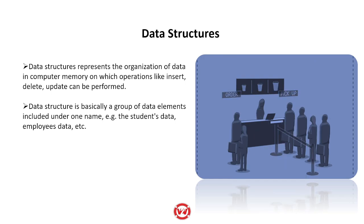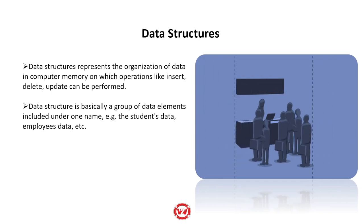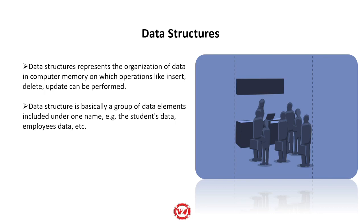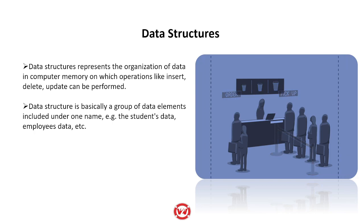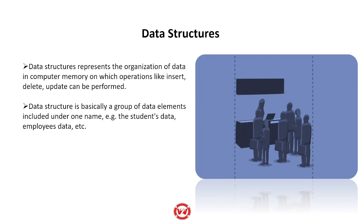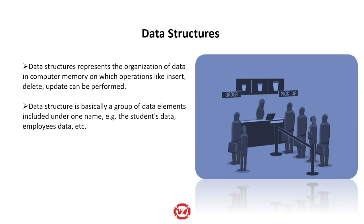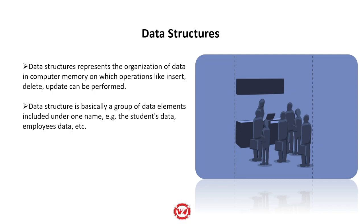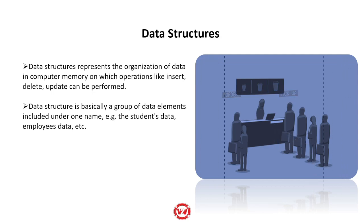A data structure is basically a group of data elements included under one name — such as students' data or employees' data. When you go to college, all the students' database is maintained. In colleges, we usually maintain it using Excel with rows and columns. That is where students' data is maintained. This database gets maintained with the help of some data structure. So Excel in the form of rows and columns is also a kind of data structure.